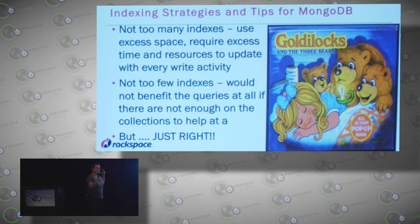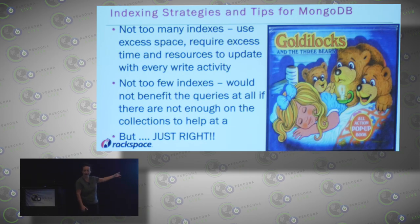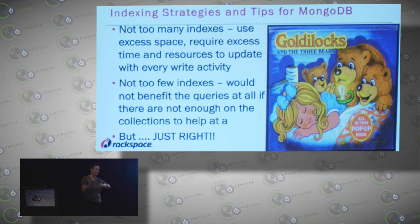So what does this say about indexing overall? I like to think of indexing like Goldilocks and the three bears — this bed is too big, this bed is too small, this bed is just right. This porridge is too hot, this porridge is too cold, this porridge is just right. You want to be just like Goldilocks: the right amount of indexes, not too many, not too few.